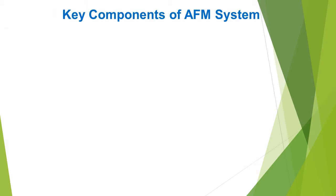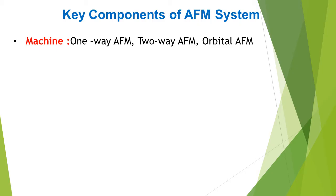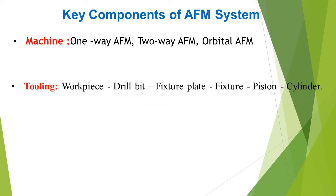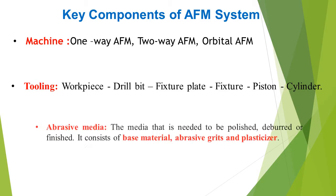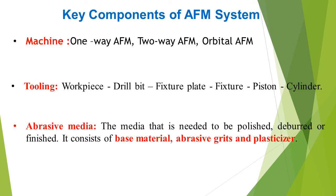The key components of the AFM system or machine are: one-way AFM, two-way AFM, or orbital AFM. Tooling components include the workpiece, drill bit, fixture plate, fixture, piston, and cylinder. The abrasive media — the media used for polishing, tapering or finishing — consists of base material, abrasive grits and plasticizer.